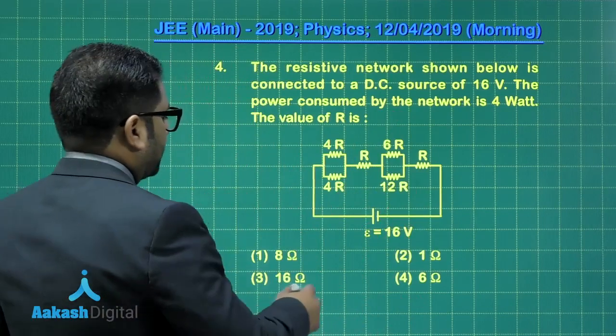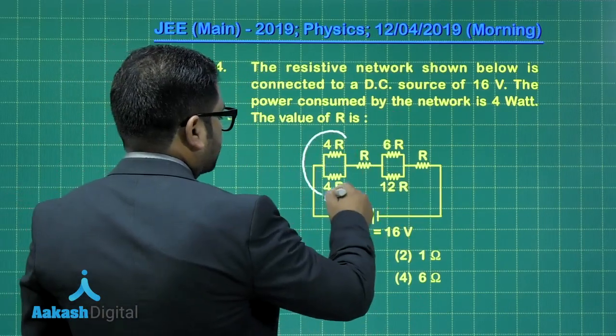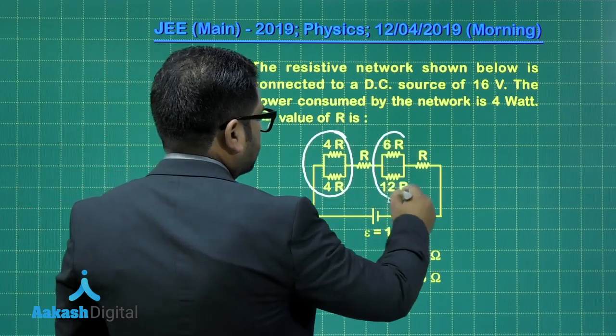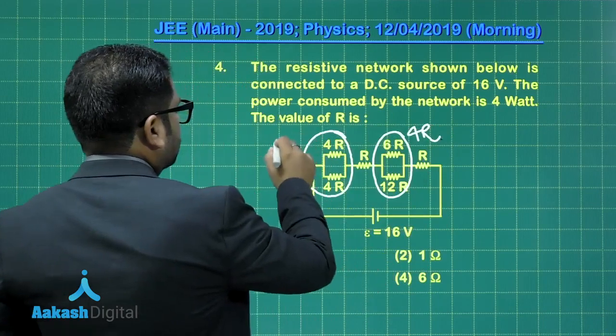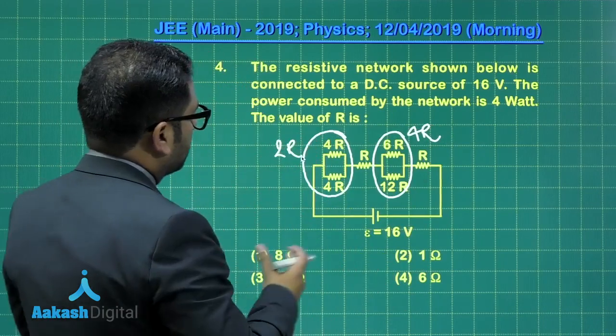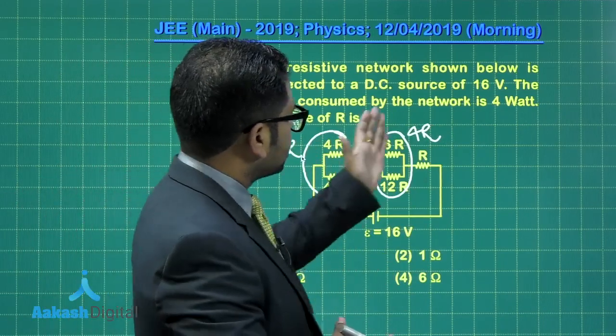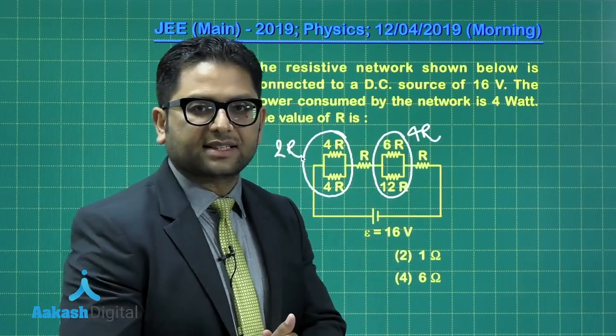Alright, let's see. This is in parallel, so that's going to be 2R. This is going to be 4R, right? And this is 2R. So what would be the total resistance? 3R, 7R, 8R is the total resistance.